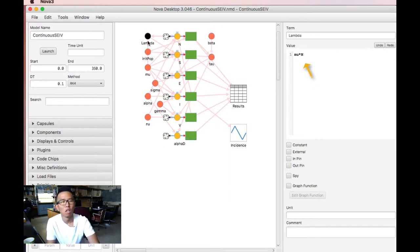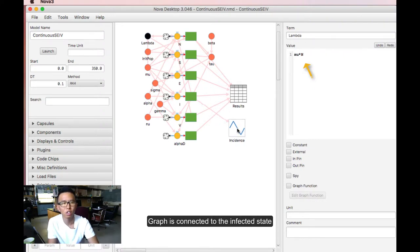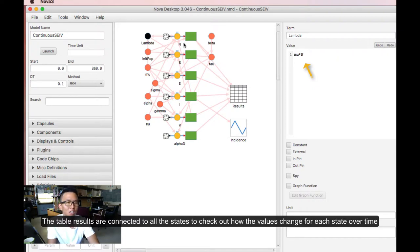Alright. The graph is connected to the infected state. And the table results are connected with all the states to check out how the values change for each state over time.